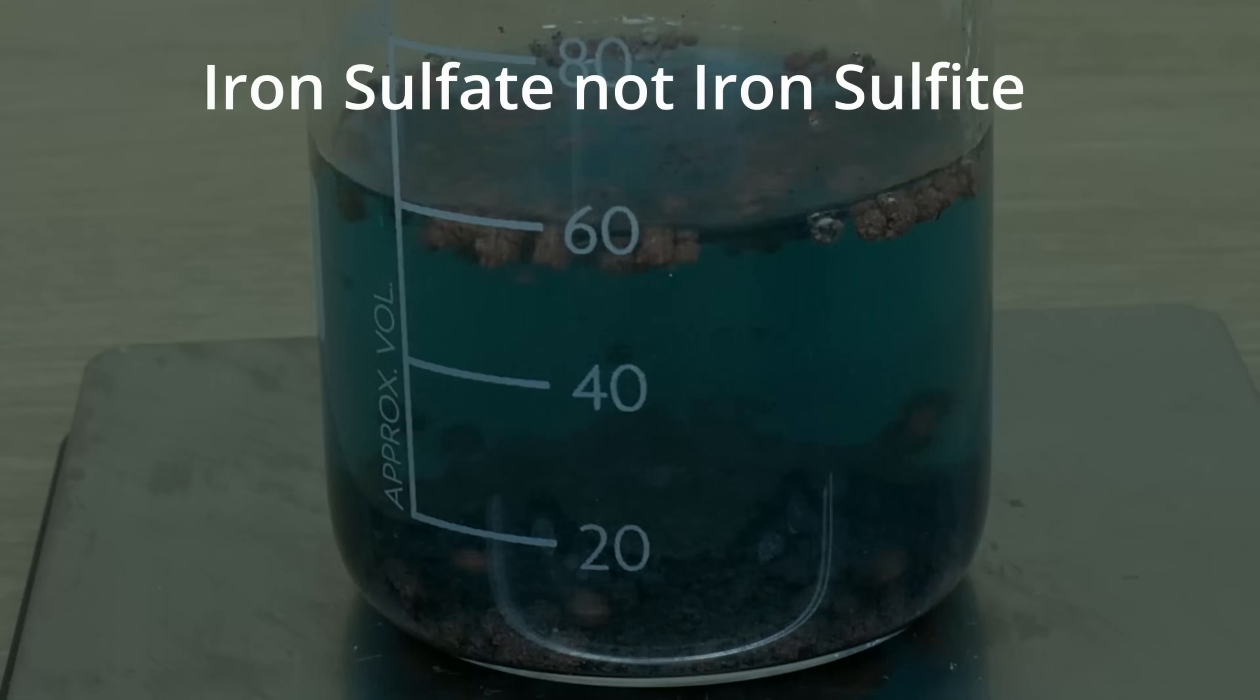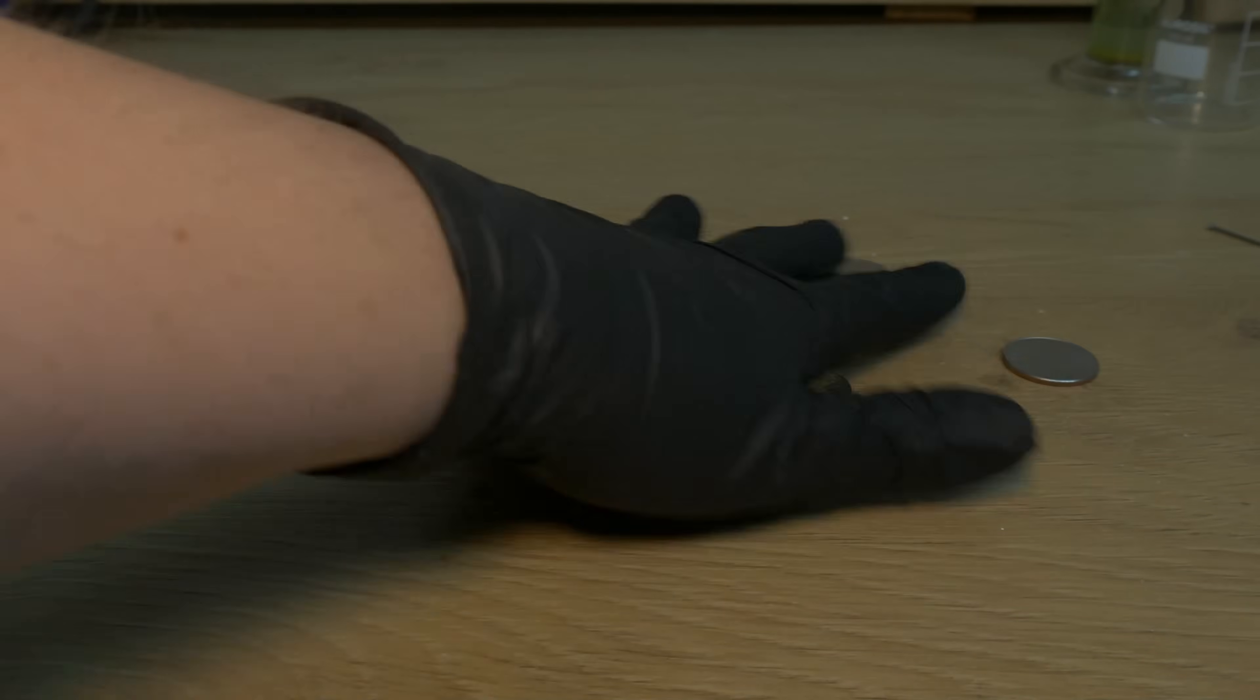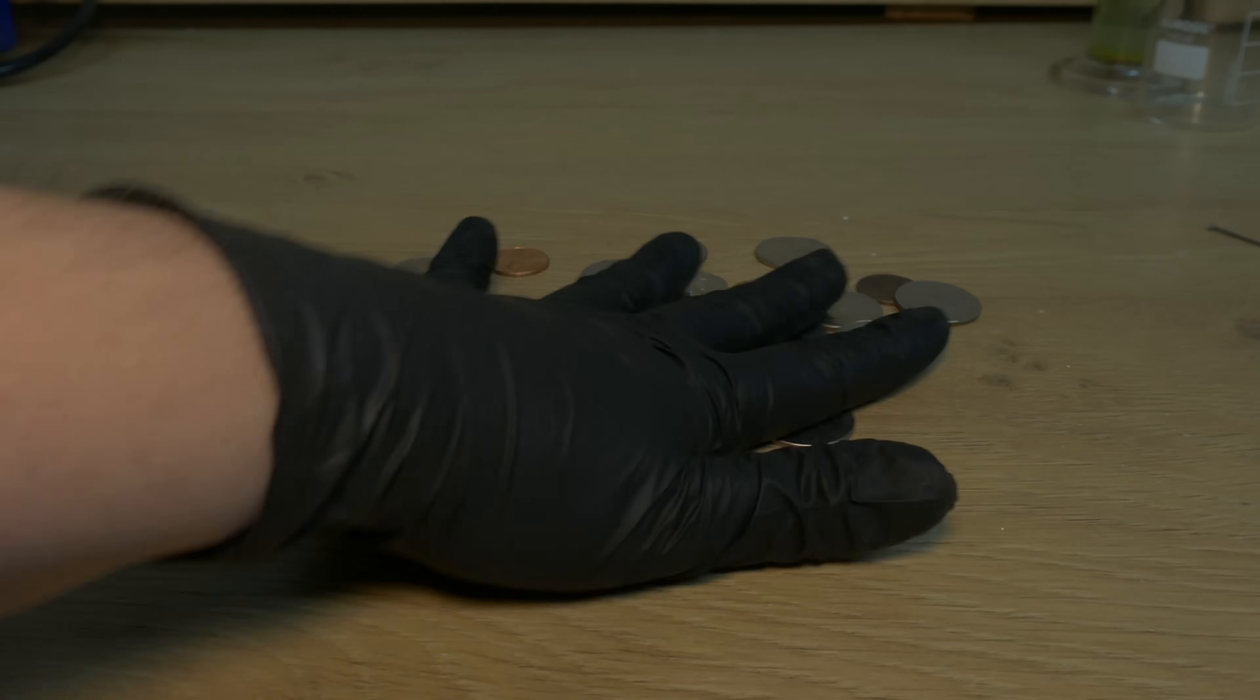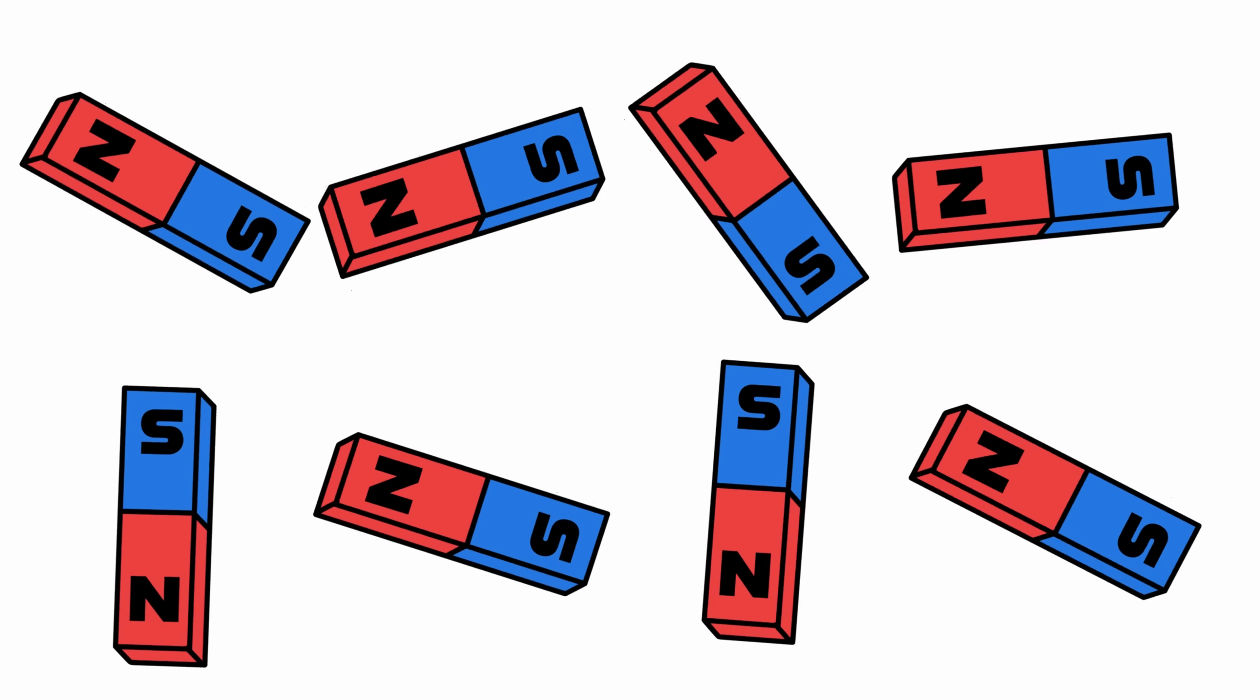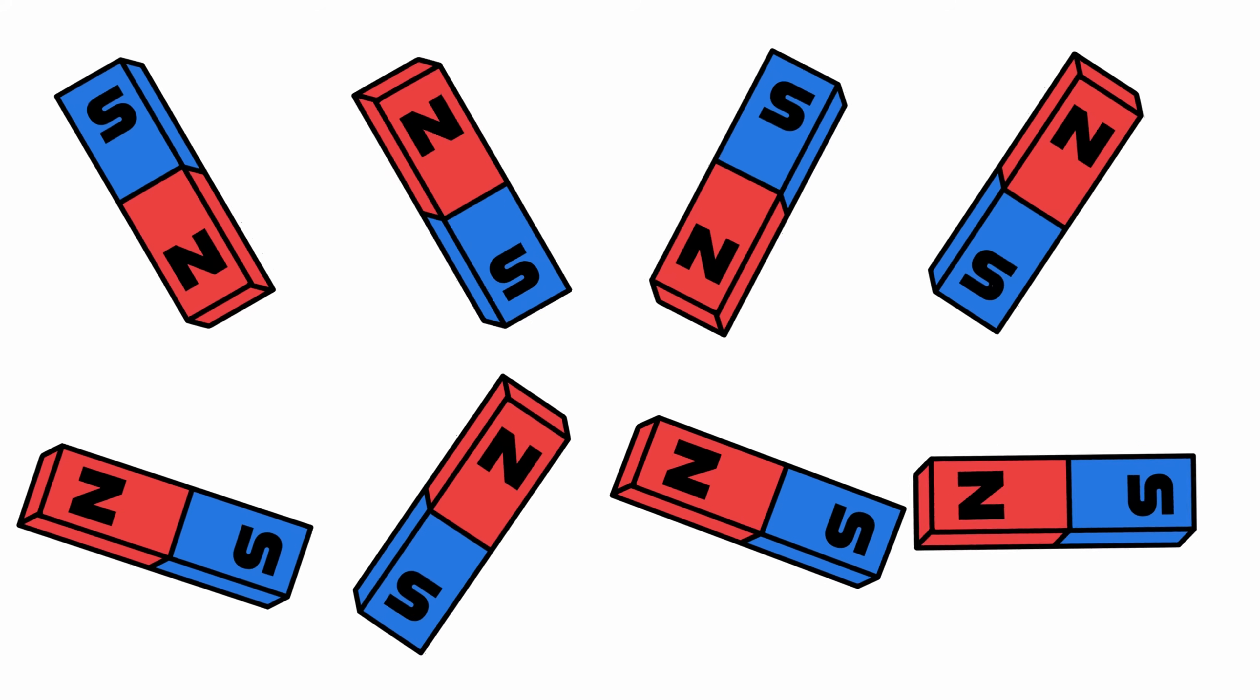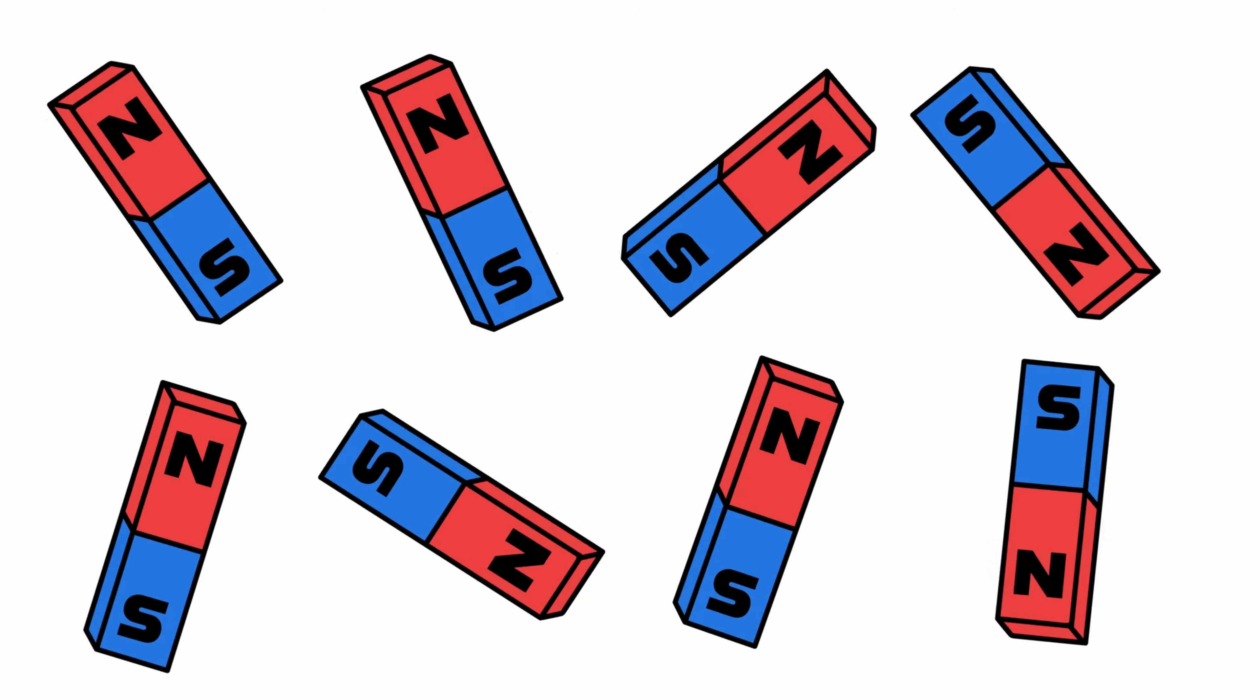Likewise, iron in certain compounds isn't magnetic either. Take iron sulfide, a pale green crystal used in gardening. It has iron in it, but a magnet won't pick it up. The iron has to be in metallic form for those magnetic domains to party together. So what does that mean in plain terms? The iron atoms need to be free and cozy enough to align their mini magnets. Even rust, iron oxide, is not ferromagnetic. It's a bummer that the flaky rust on old cars won't stick to a magnet. So the rule is, a metal can be magnetic, but not all metals are. And even iron must be in the right form.